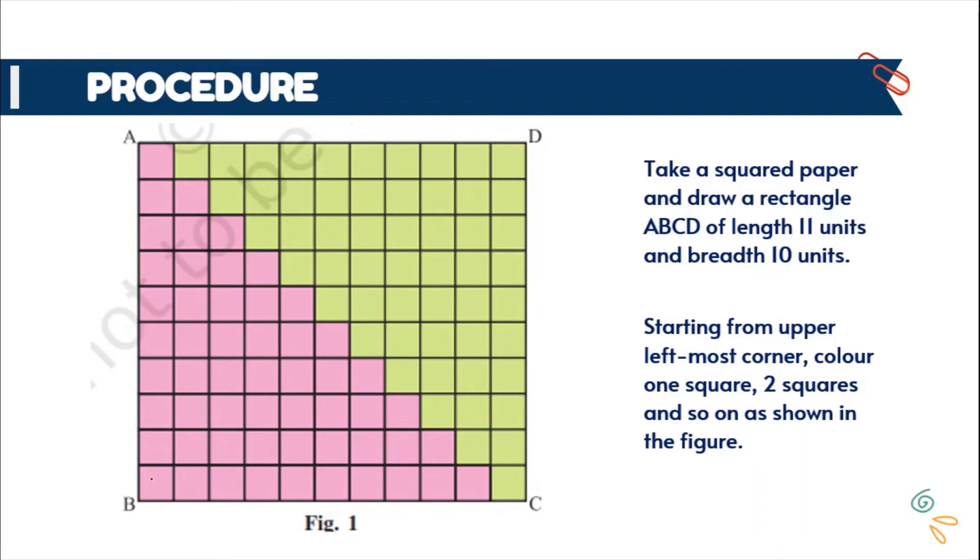You can see here length of BC is 11 units. There are 11 boxes: 1, 2, 3, 4, 5, 6, 7, 8, 9, 10 and 11. And likewise, the length of AB is 10 units: 1, 2, 3, 4, 5, 6, 7, 8, 9 and 10.